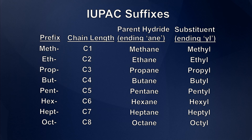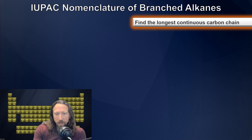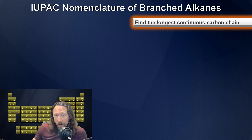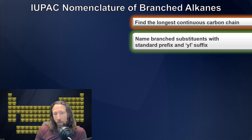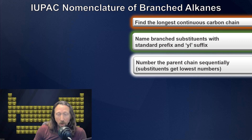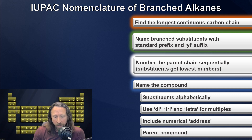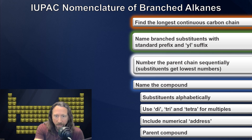Knowing the main chain and substituent identities still doesn't give us all the information we need — we also need to convey where the substituents are. Following IUPAC rules, the steps are: first, identify the main chain or parent hydride — the longest string of carbons in the molecule; second, identify all substituents and name them using the -yl suffix; third, assign each substituent an address using a numerical system along the main chain; and finally, construct the name according to IUPAC rules.